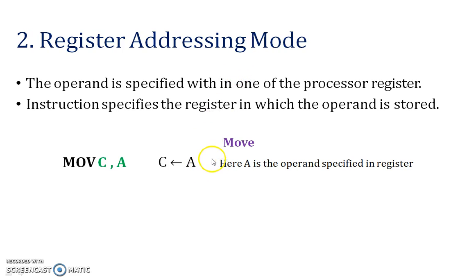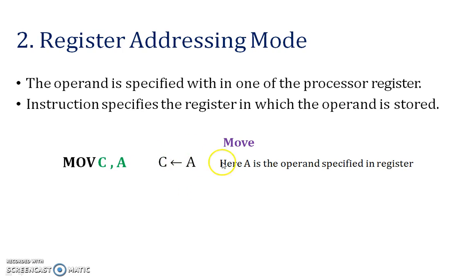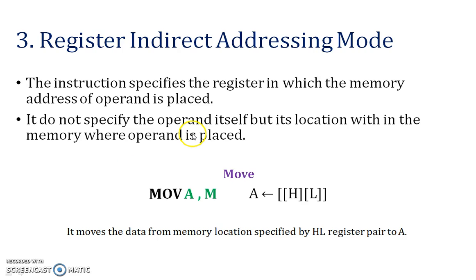Next — register addressing mode. In register addressing mode, the operand is stored in a direct register. Here you can see that A is the operand specified directly in the register, and C is the register. A is the operand — it is called register addressing mode.